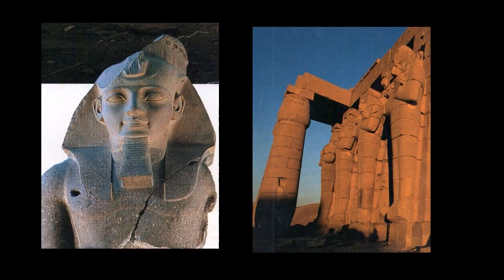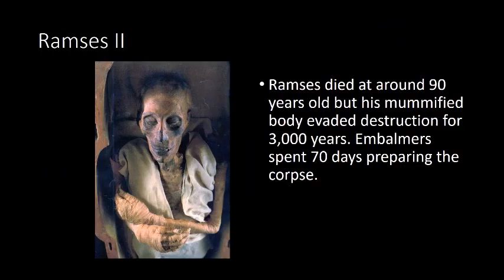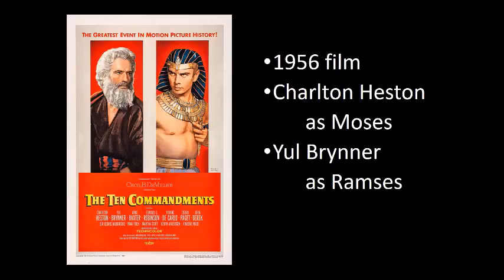These are other photos from the same National Geographic magazine, still featuring statues owned by Ramses II. It is said that Ramses died at around 90 years old, but his mummified body evaded destruction for 3,000 years. Embalmers spent 70 days preparing the corpse, and after 3,000 years the body is still intact — that's because of mummification.